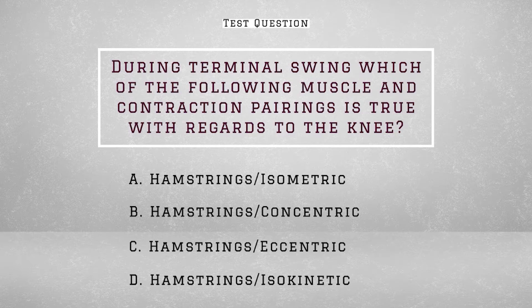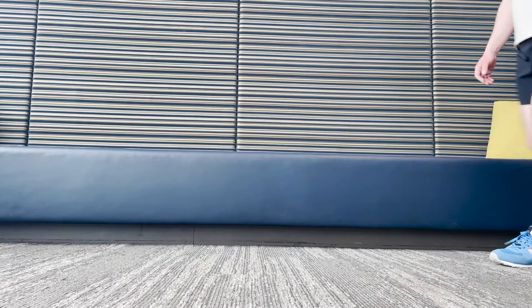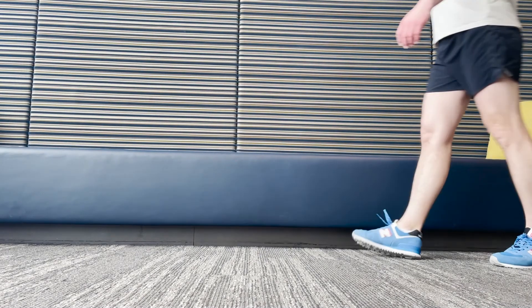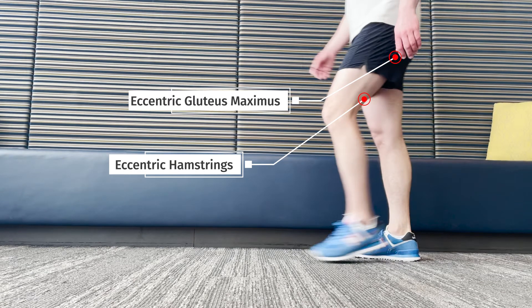Now for your test question: during the terminal swing phase of gait, which of the following muscle and contraction pairings is true with regards to the knee? A) hamstrings isometric, B) hamstrings concentric, C) hamstrings eccentric, D) hamstrings isokinetic. The answer is C — hamstrings eccentric. Both the hamstrings and the glute max are decelerating the lower extremity to prepare for heel strike.